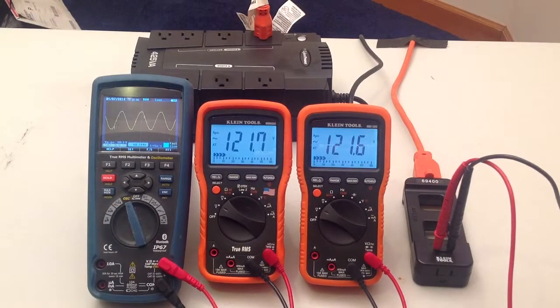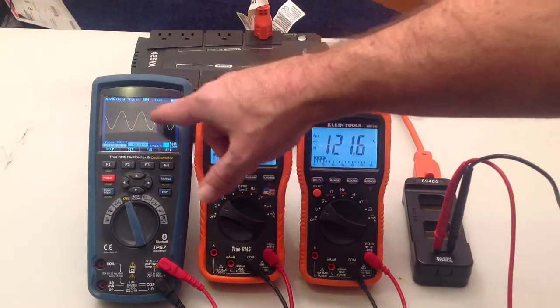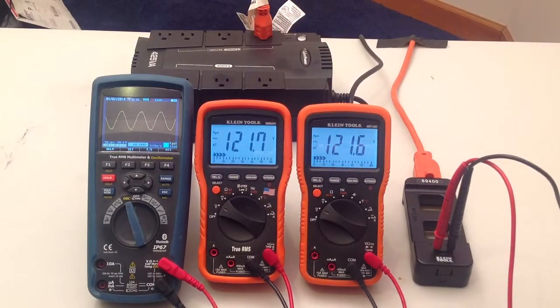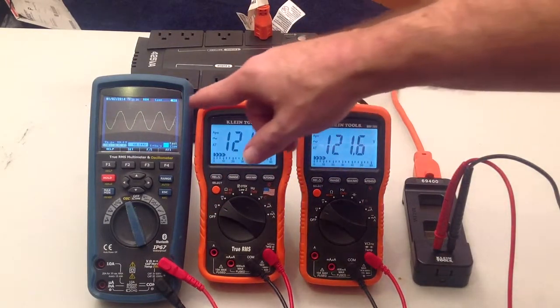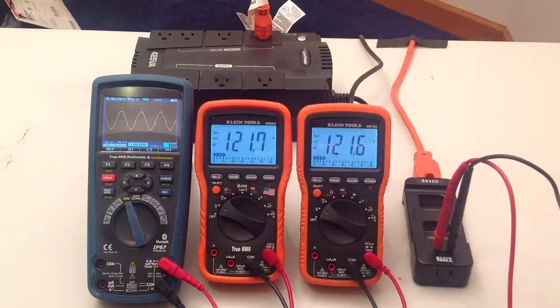A true RMS multimeter gives you an accurate representation of the amount of energy in your AC waveform. It actually takes measurements throughout this and calculates the total energy, where an RMS meter just looks at the peak to peak level and averages out what it believes the energy is.